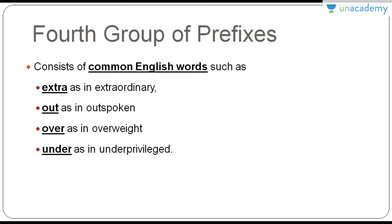The last and fourth group of prefixes consists of common English words such as extra, as in extraordinary; out, as in outspoken; over, as in overweight or overconfident; and under, as in underprivileged. With this we come to the end of this introductory chapter. I'll be bringing you more prefixes, roots, and suffixes with their meanings and more words. Thank you.